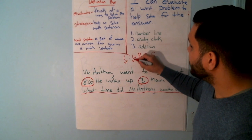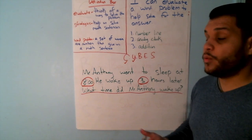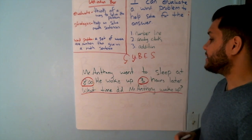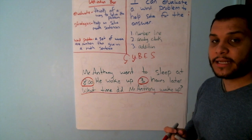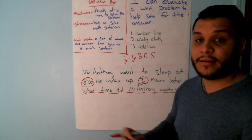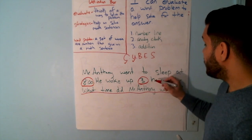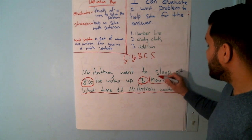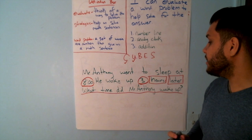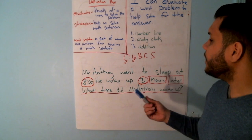We did our C, we did our U. Our B is boxed in math words. What math words do we see here? He woke up three hours later. Yes, we have two math words. We have the word hours and we have the word later.